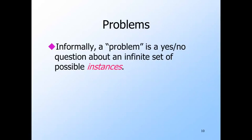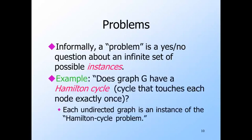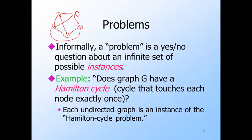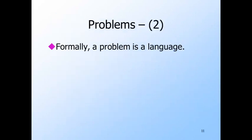Let us introduce the formal concept of a problem. Informally, a problem is a yes/no question about an infinite number of possible instances. Here's an example of a problem that is quite famous: the Hamilton cycle problem. The instances are undirected graphs, of which there are an infinite number. The answer is yes if there is a Hamilton cycle in the graph — that is, a cycle that passes through each node exactly once. Here's a graph that happens to have a Hamilton cycle, along with some other edges, but the important thing is it does have a Hamilton cycle in which every node appears once.